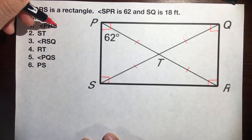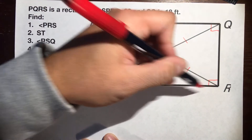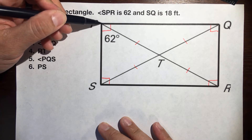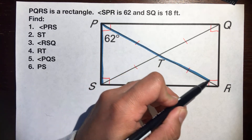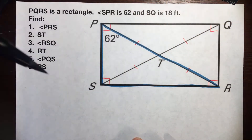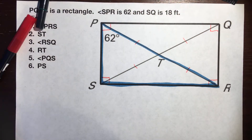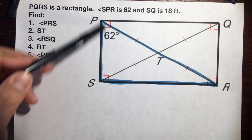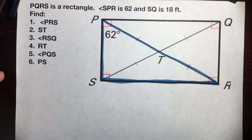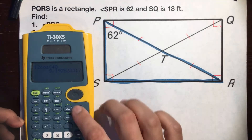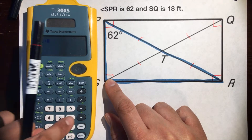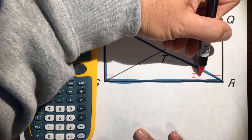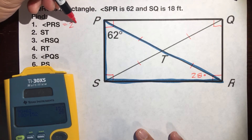What is angle PRS? I'm going to highlight this triangle with a blue pen so we can focus on it. We're trying to figure out the measure of angle PRS. It's a right triangle because this angle is 90 degrees, and angle SPR is 62 degrees. Using the triangle sum theorem — all three angles add up to 180 degrees — 90 plus 62 is 152, and 180 minus 152 is 28 degrees. So angle PRS is 28 degrees.